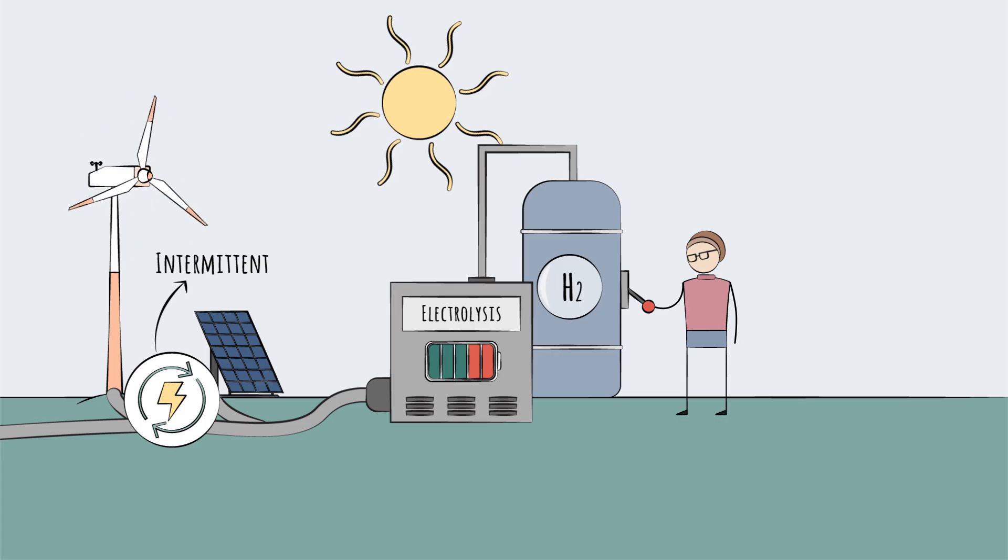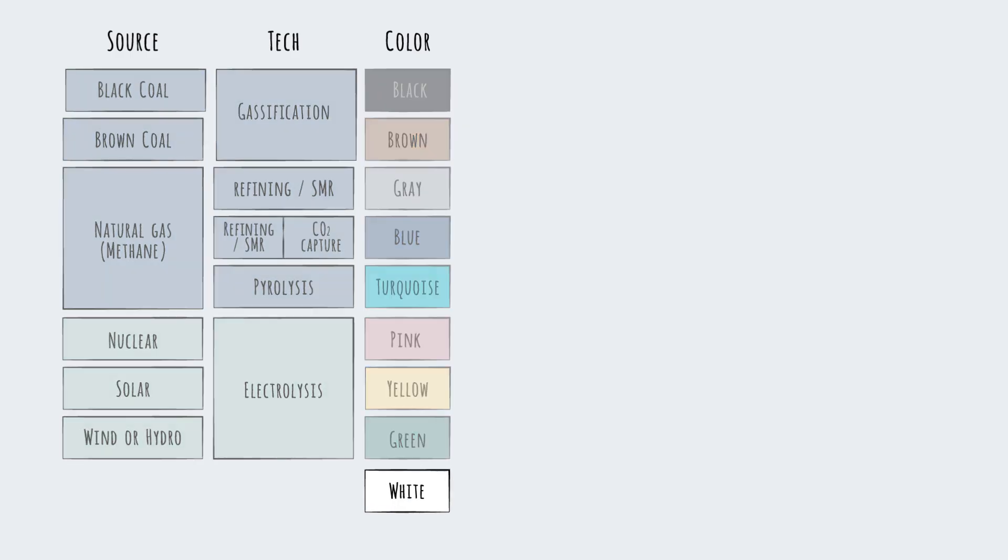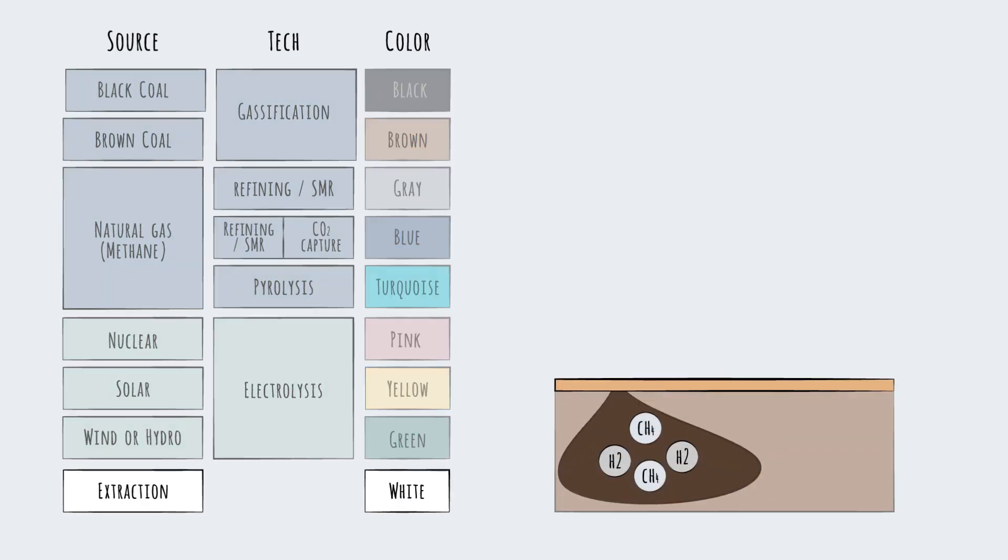But there is a final arc in our rainbow to mention, a newer, still largely theoretical source: white hydrogen. This means extracting intact hydrogen molecules from the ground. This could be done using existing oil and gas infrastructure at existing sites.